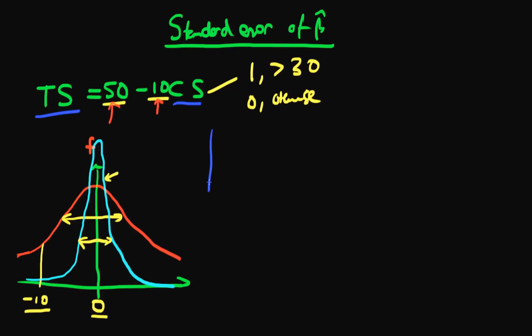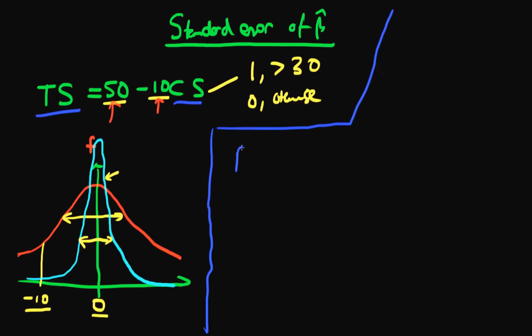Okay so how do we go about deriving the standard error of beta hat. We remember from last time that we found that beta hat was equal to beta p plus the sum of xi minus x bar times ui, all divided by ssx squared when this sum is from i equals 1 to n.